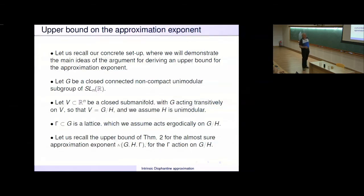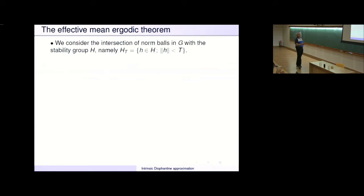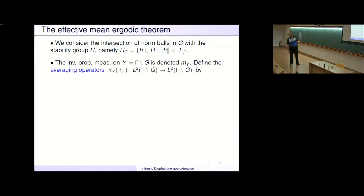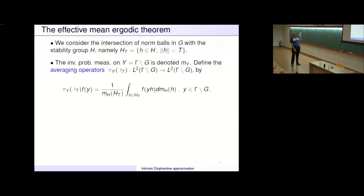Let us recall the bound of Theorem 2 for the almost sure approximation exponent K_{G,H,gamma} for the gamma action on G mod H. We consider the intersection of norm balls in G with the stability group H. H_T is the set of h in H with norm bounded by T. The invariant probability measure on Y — which is the probability space G mod gamma — is denoted by m_Y, and we define the averaging operators Pi_Y beta_T from L^2(G mod gamma) to itself.